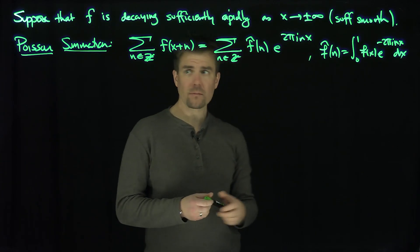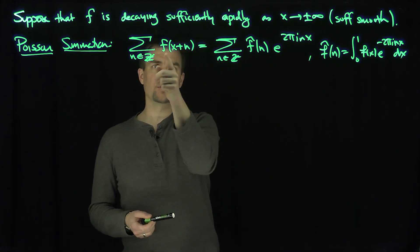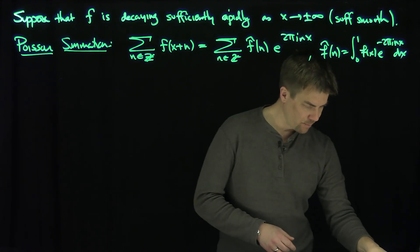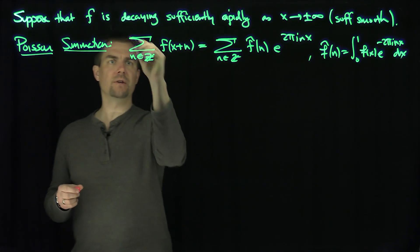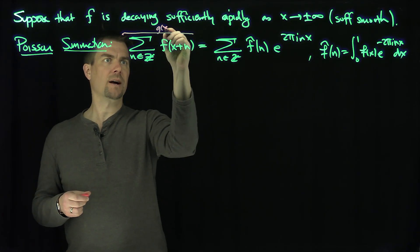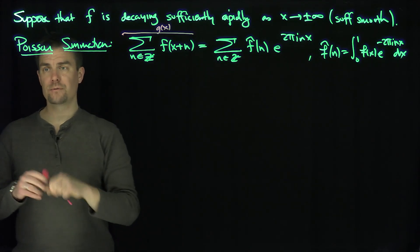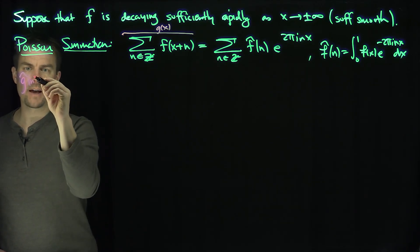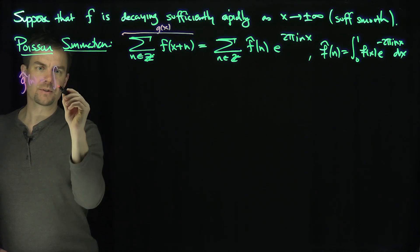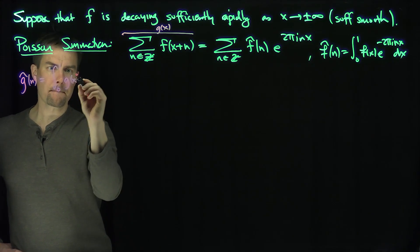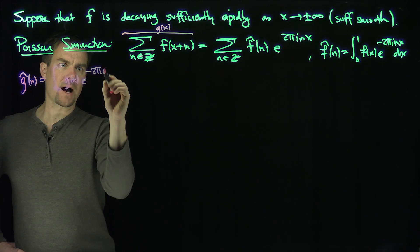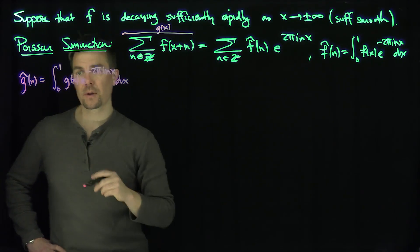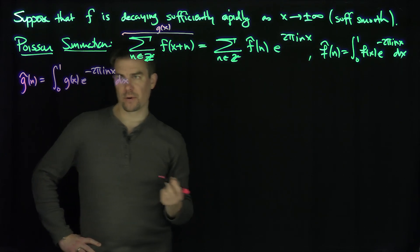How do you prove something like this? Well, what you'd like to do is compute the Fourier coefficients of this expression on the left-hand side. In other words, let's call this function g of x. What are the Fourier coefficients of g? What would g-hat of n be? g-hat of n would be the integral from 0 to 1 of g of x times e to the minus 2 pi i n x. That's the definition of the Fourier coefficient.